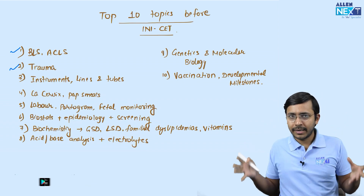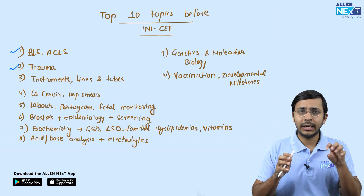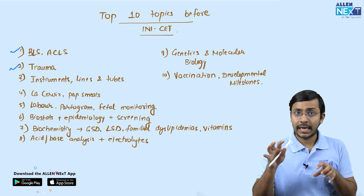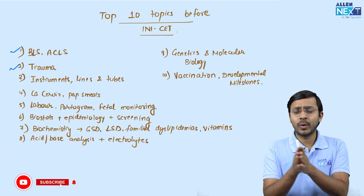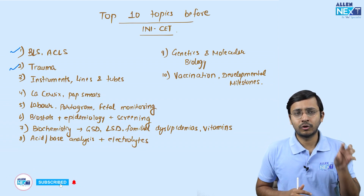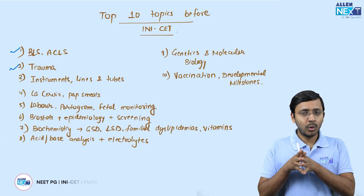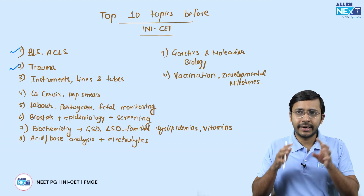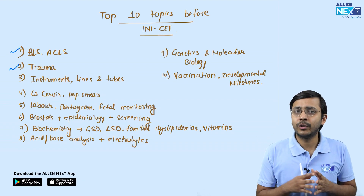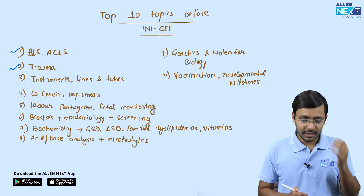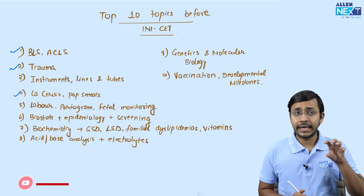Number three: Instruments, lines, and tubes. Instruments come in a mixed bag — ortho, surgery, ENT, and gynae instruments. One or two questions will come from instruments; it is very high yield. Spend around two to three hours covering instruments across all subjects and you'll get two to three questions correct.